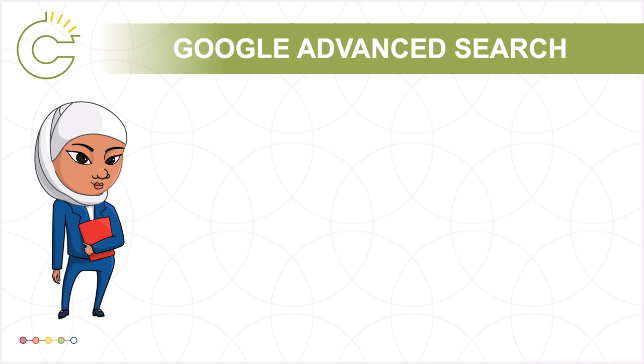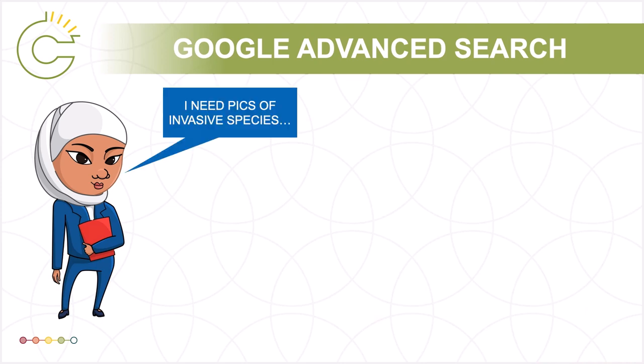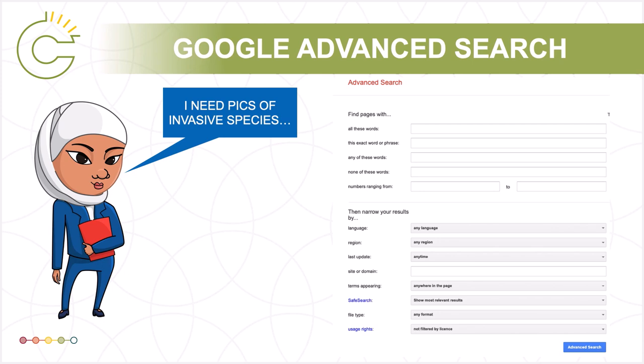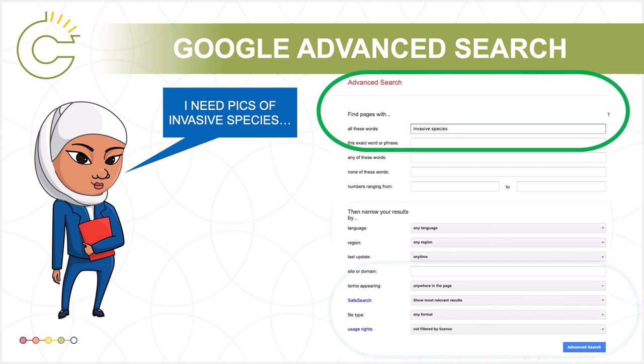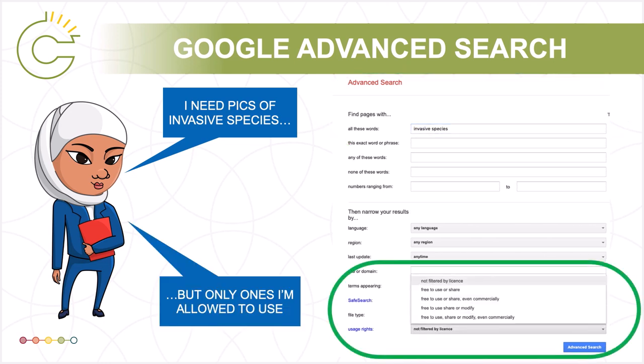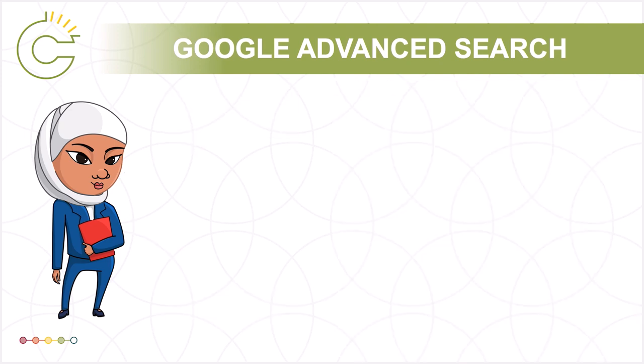So where should Ira start? While Google might be the obvious first stop, using it effectively to find open content is not so obvious. Use the Google Advanced Search and filter your results by usage rights — the pull-down menu at the bottom of the screen — to get started. Be sure to confirm the open license assigned to the item by visiting the item's source website.